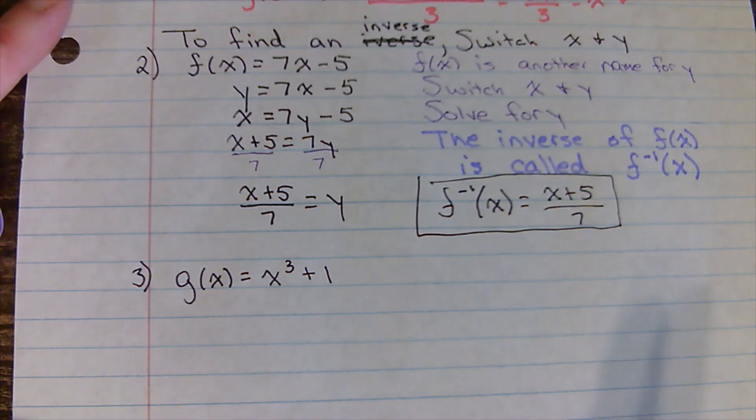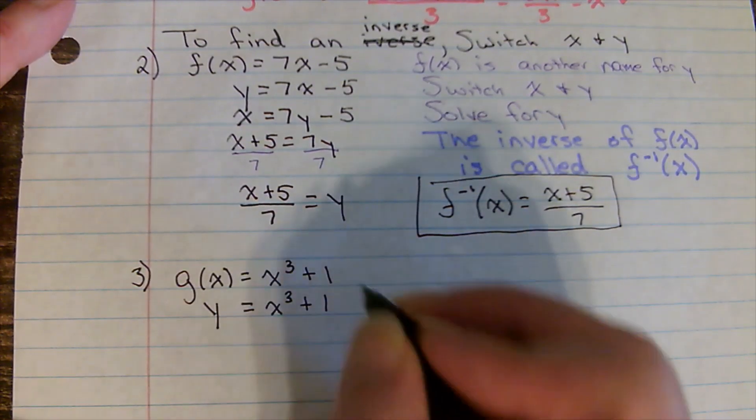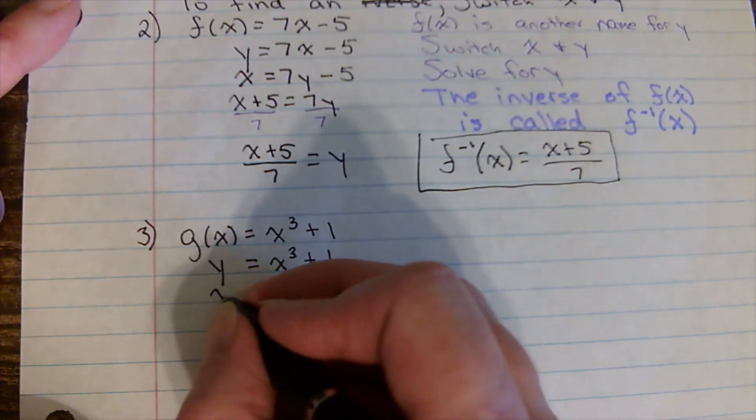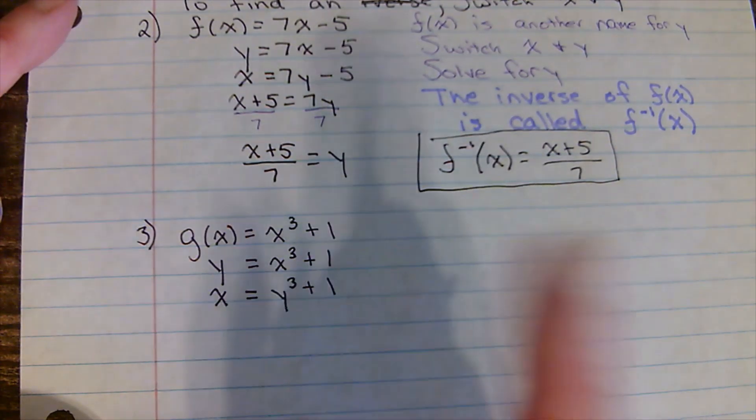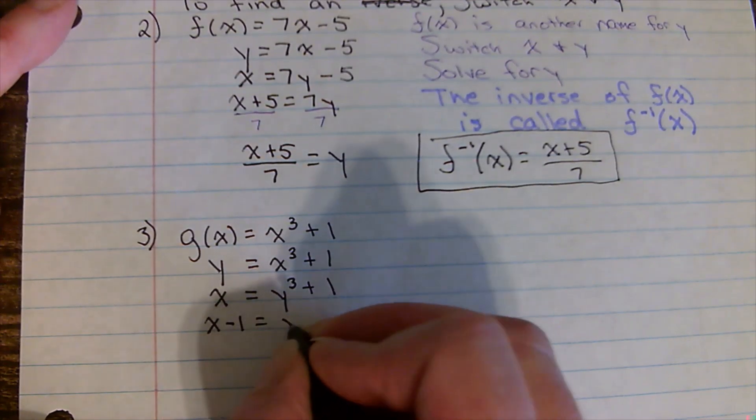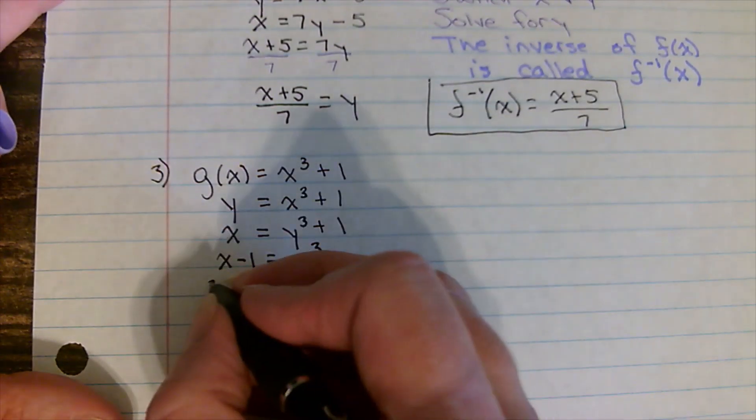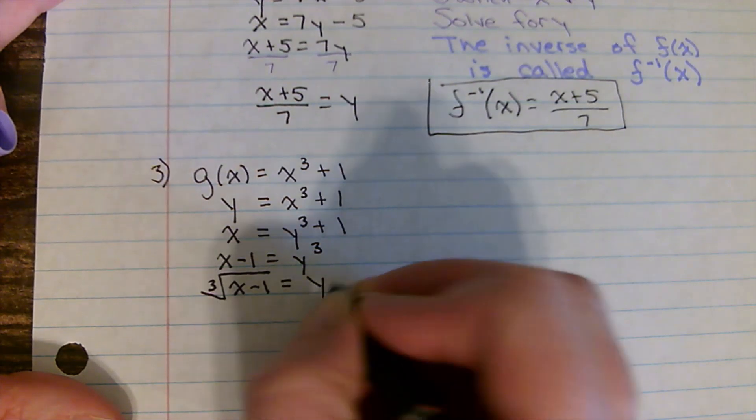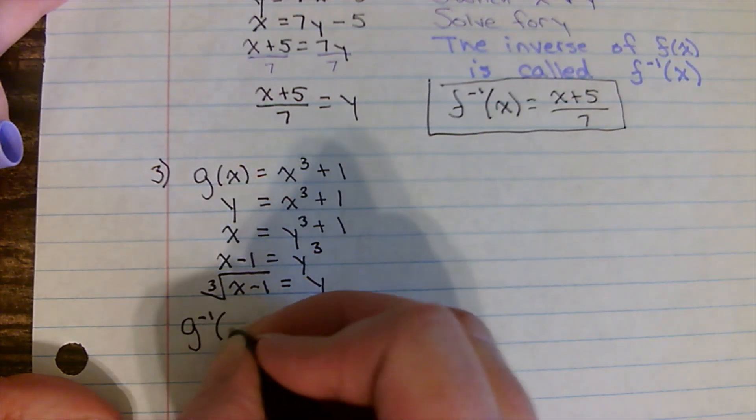So to get ready to switch x and y, I call g of x, y. And when I switch x and y, the cube is going to stay where it's at. So now it's x equals y cubed plus one. So we switched. Now we're going to solve for y. Undo cubed, we're going to take the cube root. His proper name is the inverse of g.